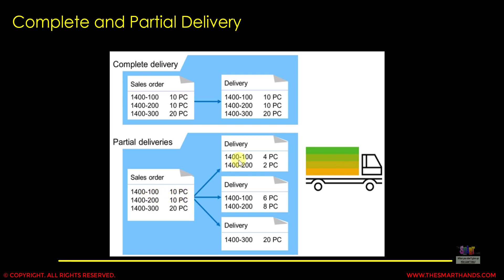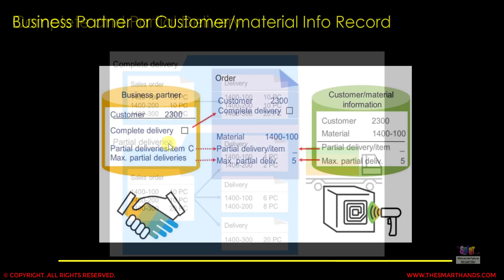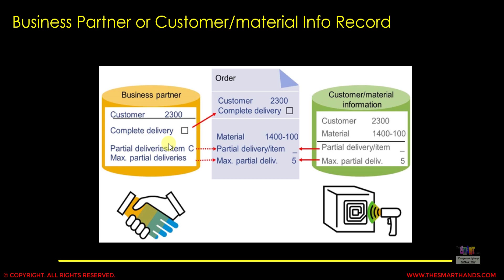If partial delivery is allowed, goods can be sent whenever they're ready. For example, in an order with three items of quantities 10, 10, and 20, the first delivery could send 4 and 2 of the first and second items, the second delivery sends more, and the third delivers the remaining product. The complete delivery setting can only be maintained in the business partner, while partial delivery per item and maximum partial deliveries can also be maintained in the CIR record.